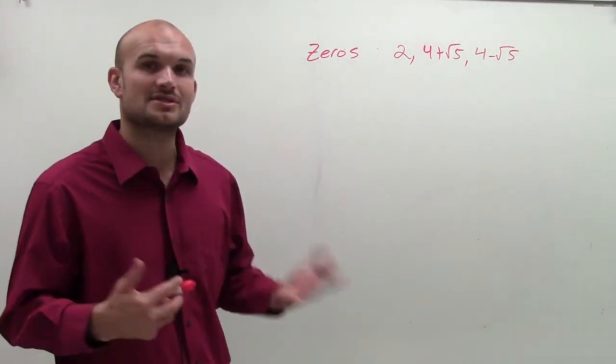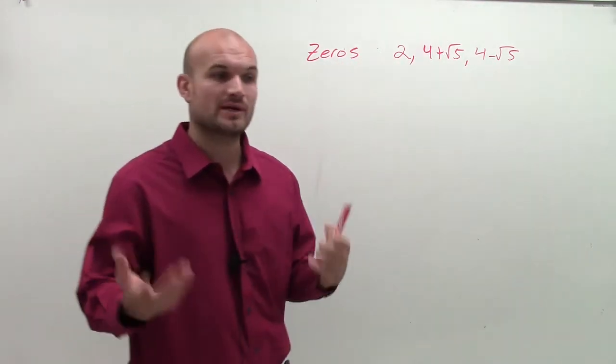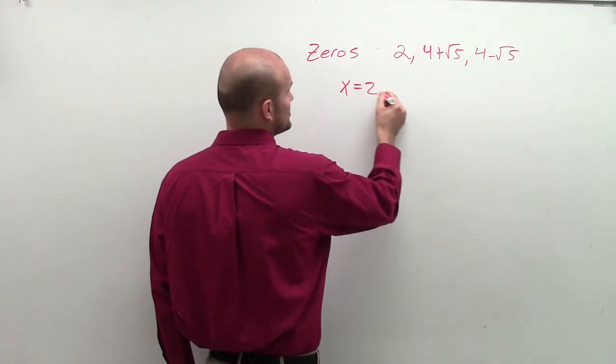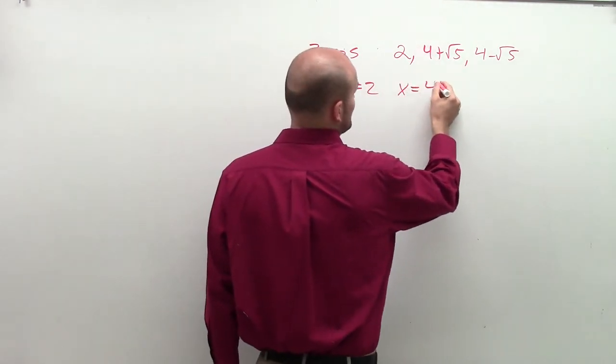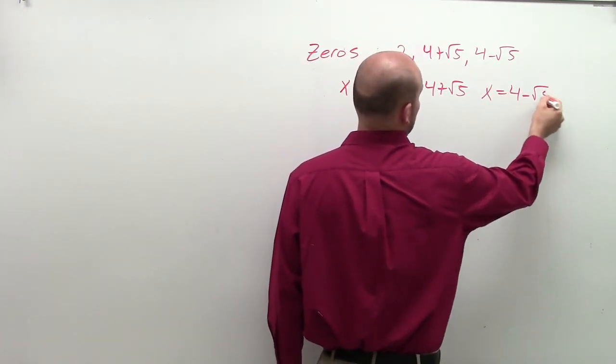So I'm going to use this just like I've done all the previous examples. When given the zeros, the first thing we want to do is remember we can write the zeros as intercepts. So we could say that x equals 2, x equals 4 plus square root of 5, and x equals 4 minus square root of 5.